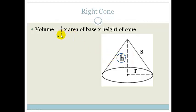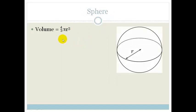So in this case, it's going to be a third times by the area of the base, which is going to be pi r squared, times by the h, and that is how you get the area of the right cone.